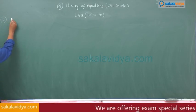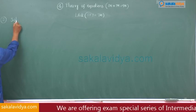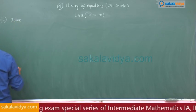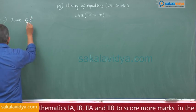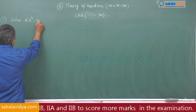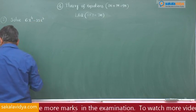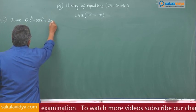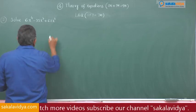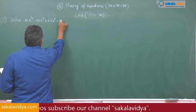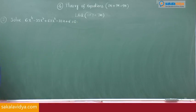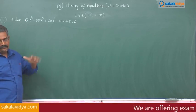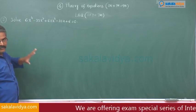Second problem: solve 6x⁴ minus 35x³ plus 62x² minus 35x plus 6 is equal to 0. The degree of the equation is 4, that means even degree.